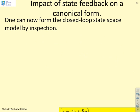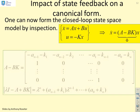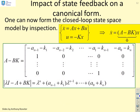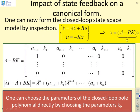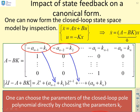What about using canonical forms? You remember that we could do state feedback using canonical forms. What we said is if you're in a canonical form you can choose the parameters of the closed loop pole polynomial directly by choosing the parameters KI. So AN minus 1 minus K1 is this parameter here. AN minus 2 minus K2 is this parameter here. All the way to the end where AN0 minus KN is this parameter here. So you could choose the parameters of your polynomial directly by choosing these Ks directly.